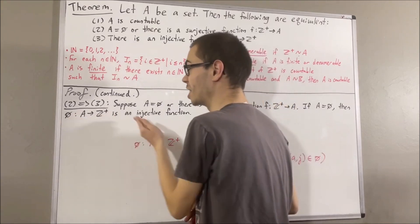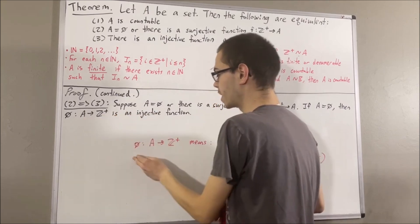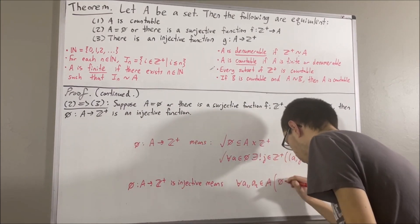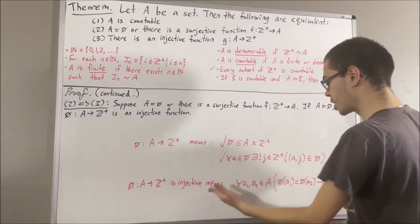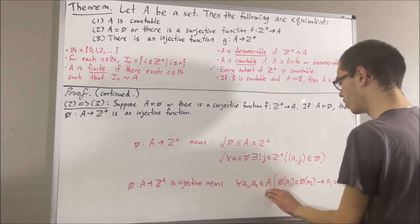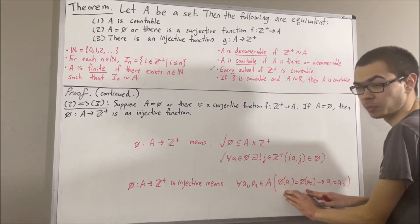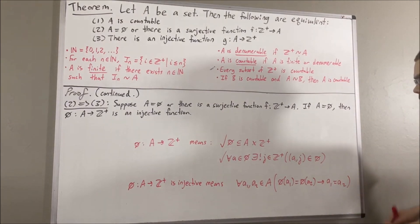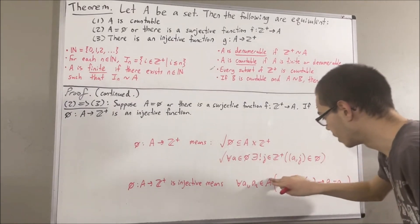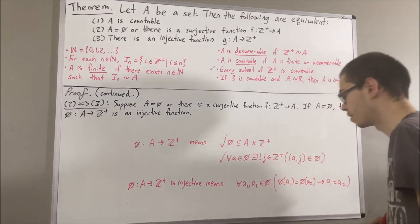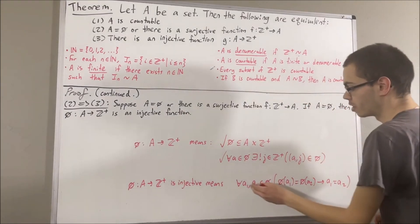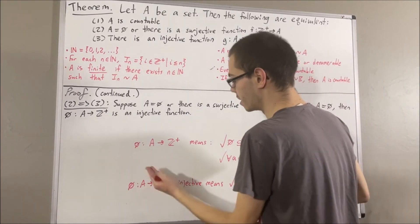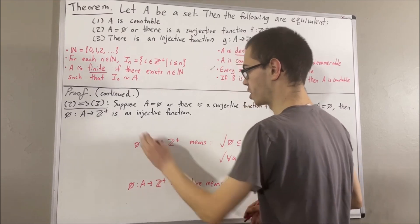So the empty set is a function from A to the positive integers. To say that this function is injective means: for every two elements A₁ and A₂ in A, if the output values yielded by the function are equal, then A₁ and A₂ are equal. Since we are assuming A is equal to the empty set, this is vacuously true because it is a statement about all elements of the empty set. So the empty set is indeed an injective function from A to the positive integers.